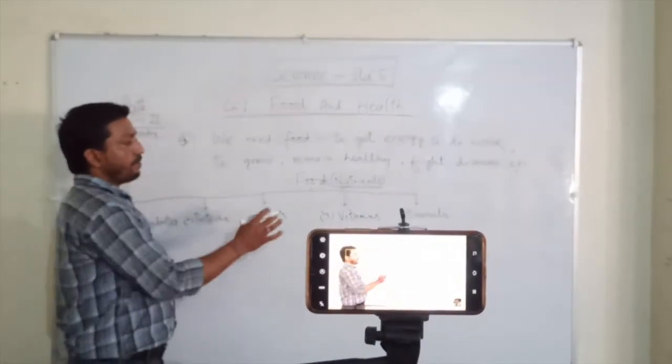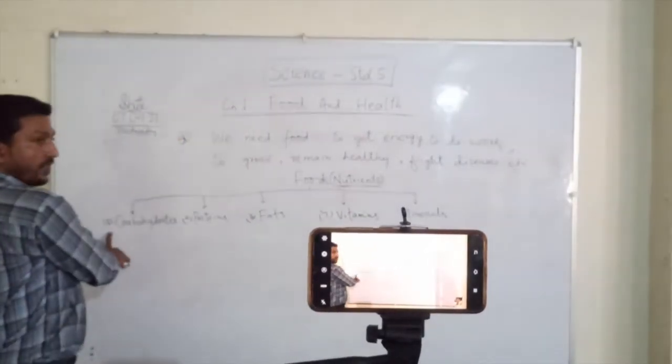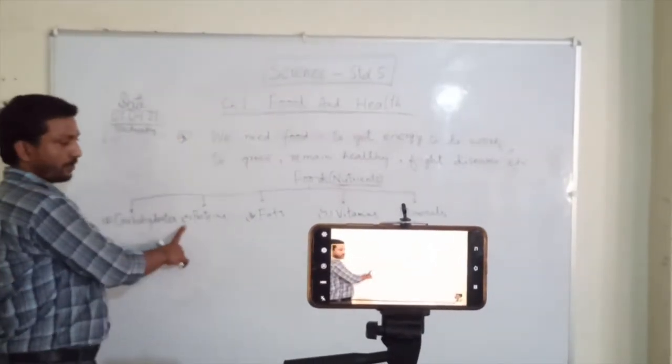There are five main nutrients present in food. They are: first one is carbohydrates, second is proteins.